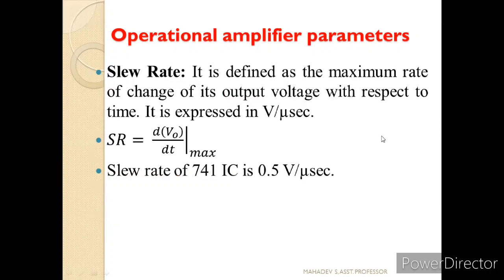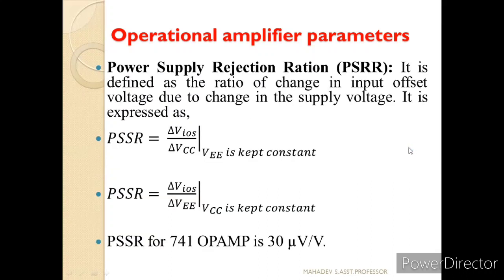Next is Slew Rate, defined as the maximum rate of change of output voltage with respect to time, expressed in volts per microsecond: SR equals dVout by dt (maximum). The ideal value for the µA741 IC is 0.5 volts per microsecond. Next is Power Supply Rejection Ratio (PSRR), defined as the ratio of change in input offset voltage due to change in supply voltage: PSRR equals ΔVIOS divided by ΔVCC (keeping VEE constant), or PSRR equals ΔVIOS divided by ΔVEE (keeping VCC constant). The ideal value of PSRR for the µA741 is 13 microvolts per volt.